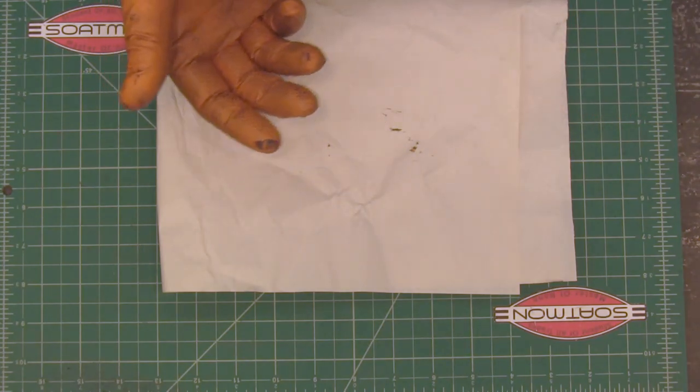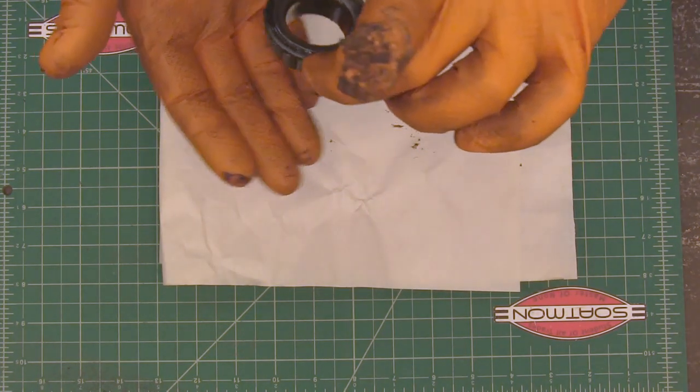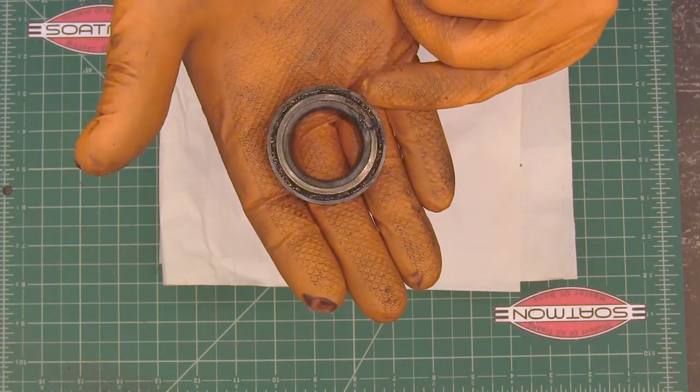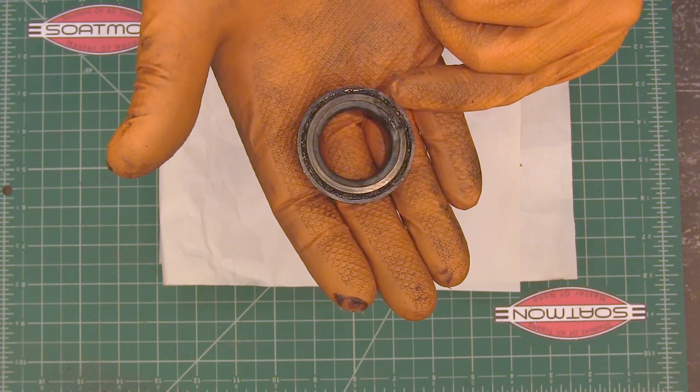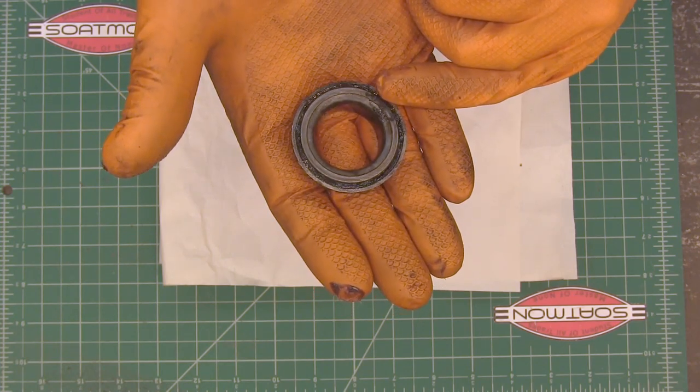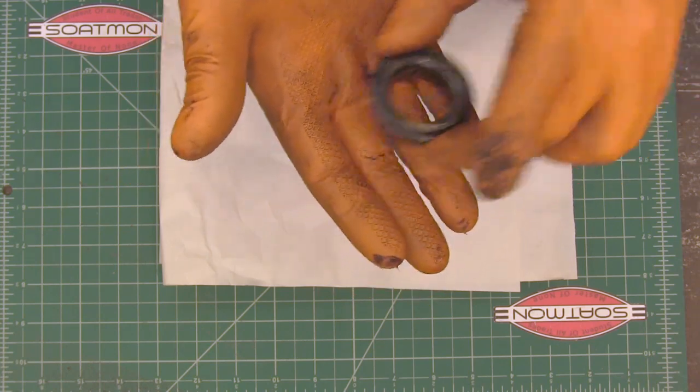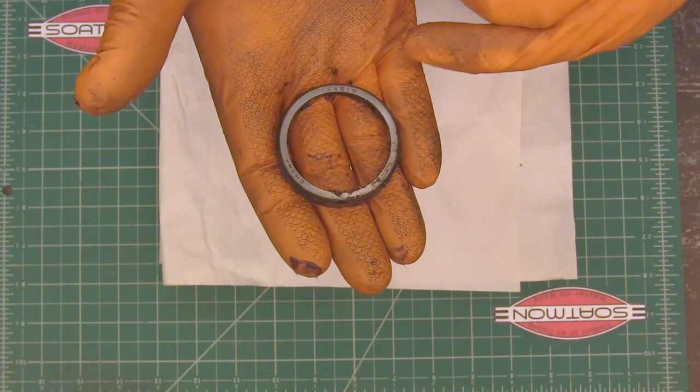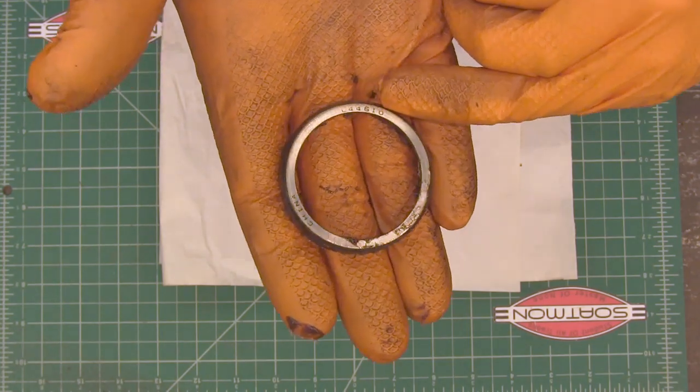And then mine actually had, like see this one, this is the smaller bearing. Mine has, the trailer that I'm doing today has two different size bearings in it. It's got an inner bearing and an outer bearing and they're different sizes. This one didn't have a number on it so I had to get the number off of the race right there.